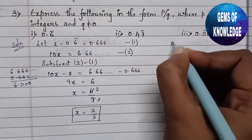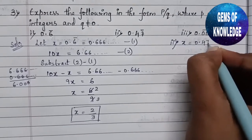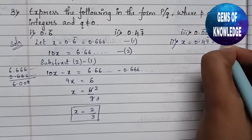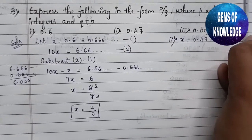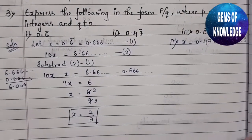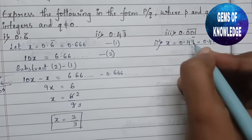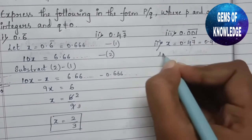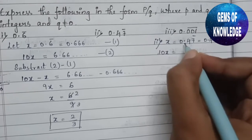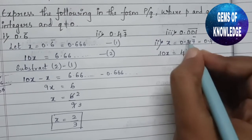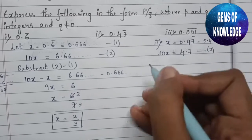Similarly, let us solve the second one. Let x equal 0.47 with a bar, which means x equals 0.47777... and so on — let this be equation 1. We again multiply by 10, because the bar is only on a single digit. So 10x equals 4.7777... and so on — let this be equation 2.